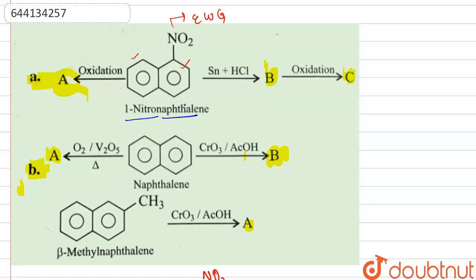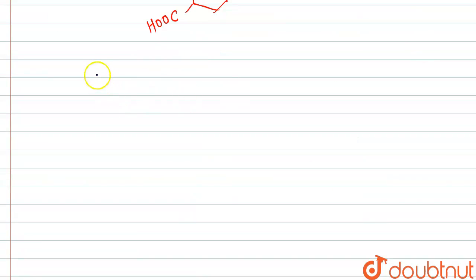On reduction, this nitro group will be simply reduced to NH2 group. So what we would be having as B: B would be this ring structure, and instead of NO2 we are having NH2 group. This is alpha-naphthylamine.